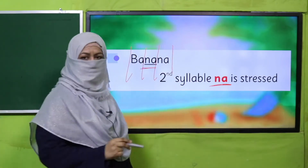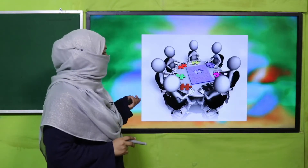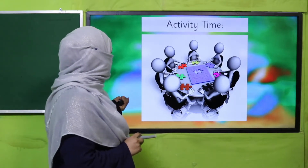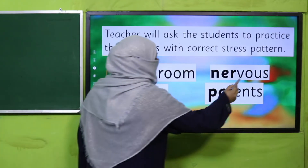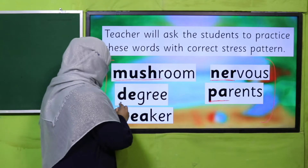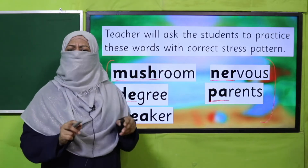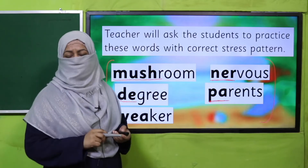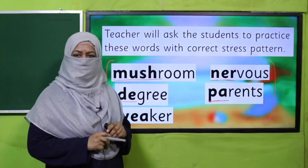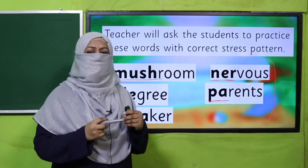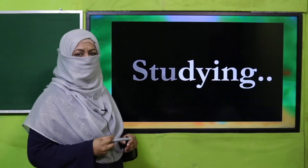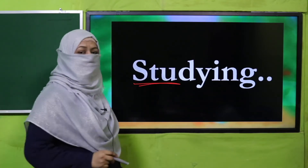Let's practice. In your book, words are given and the bold part of every word is the stressed syllable. Pause the video, pronounce them, and teachers — please make sure every child reads and is corrected on stress. Now you understand: when we say a word, a syllable can be stressed and another can be unstressed. For example, 'studying' — the first syllable is the stressed syllable.